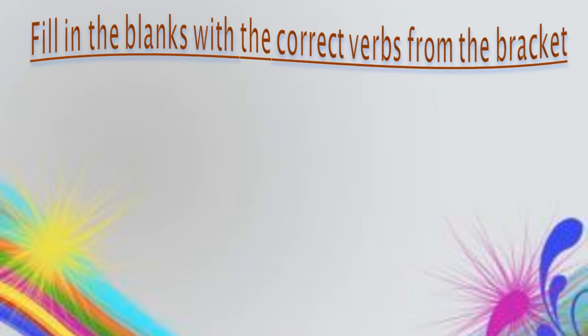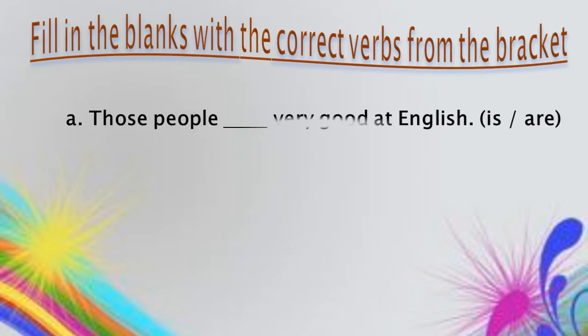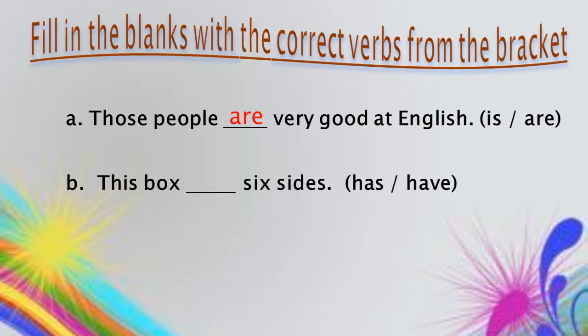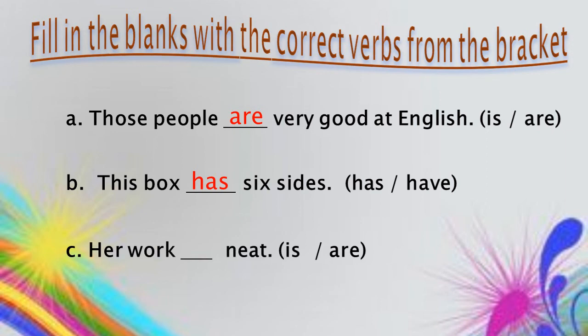Fill in the blanks with the correct verbs from the bracket. First: 'Those people ___ very good at English.' The subject 'those people' is plural, so it takes the plural verb 'are.' Next: 'This box ___ six sides.' The subject 'this box' is singular, so it takes the singular verb 'has.' Next: 'Her work ___ neat.' The subject 'her work' is singular, so it takes the singular verb 'is.'